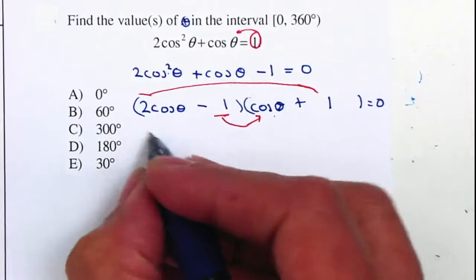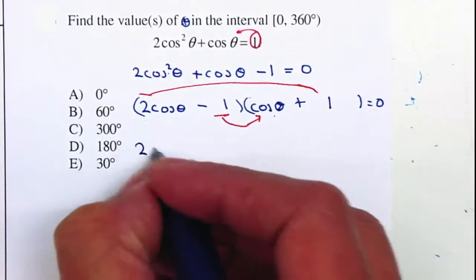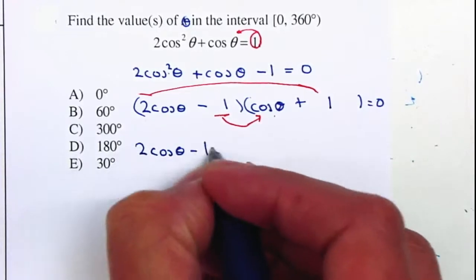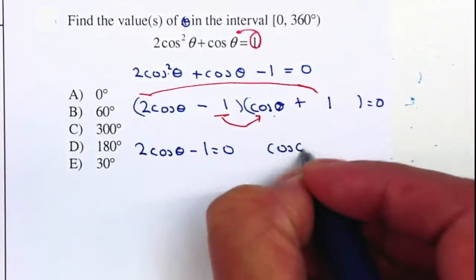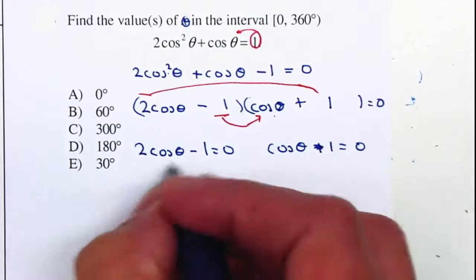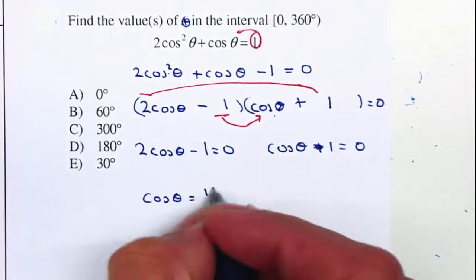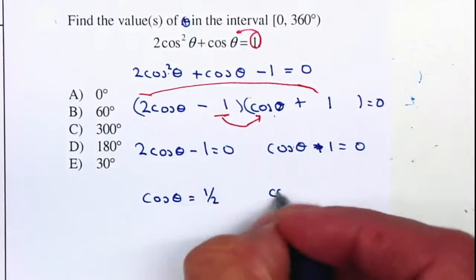From there I'm going to use my zero product property since they are multiplying and they're equal to 0. I know that at least one of them should be equal to 0. That's 1 equal to 0. Move the 1 to the right and divide by 2, so it gives me cosine of the angle is equal to 1/2. Move the 1 to the right, it becomes negative 1.